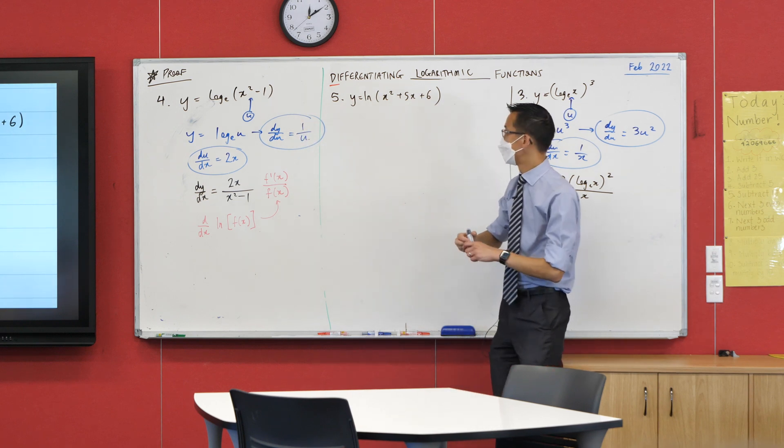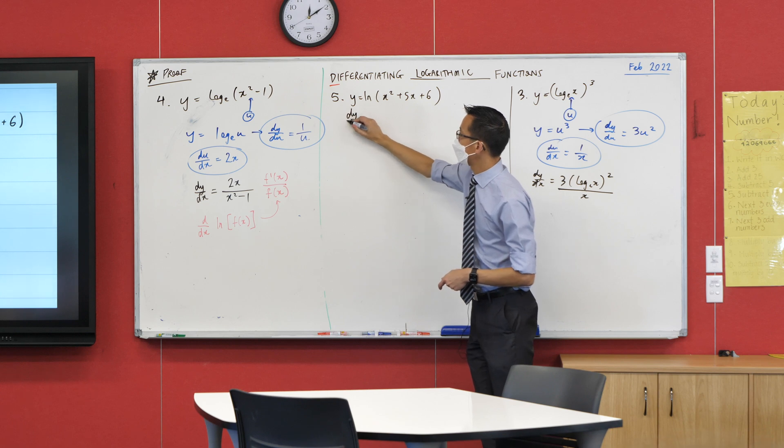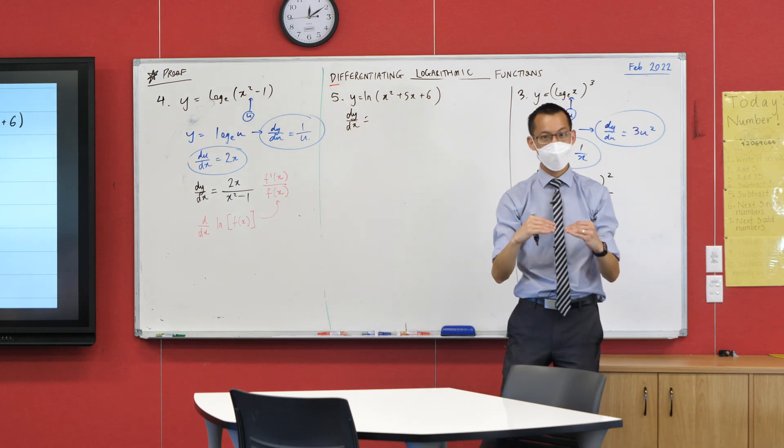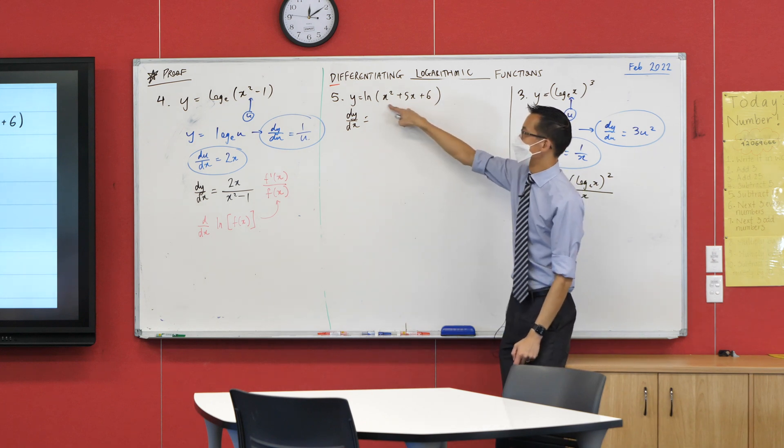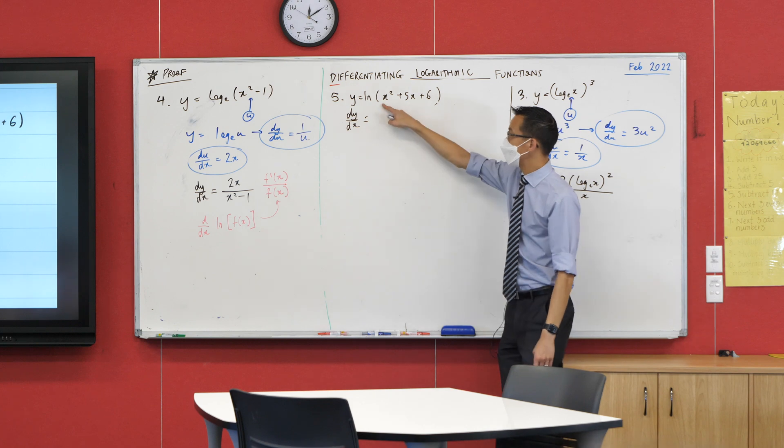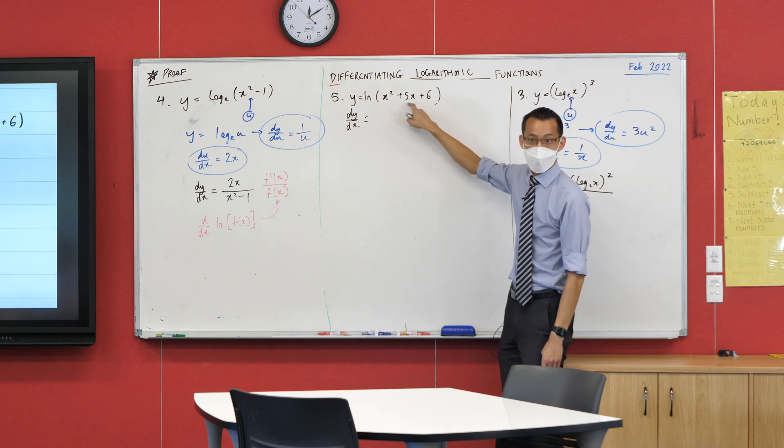However, once you're comfortable you should actually be able to say, especially using a formula like this—it's quicker, it's more efficient. Don't feel like you need to go the long way around every time. So here I'm going to go immediately to an f dash on f situation. This is the f(x), or the u(x), or you can call it anything you like. Can you just read off the derivative of that for me?